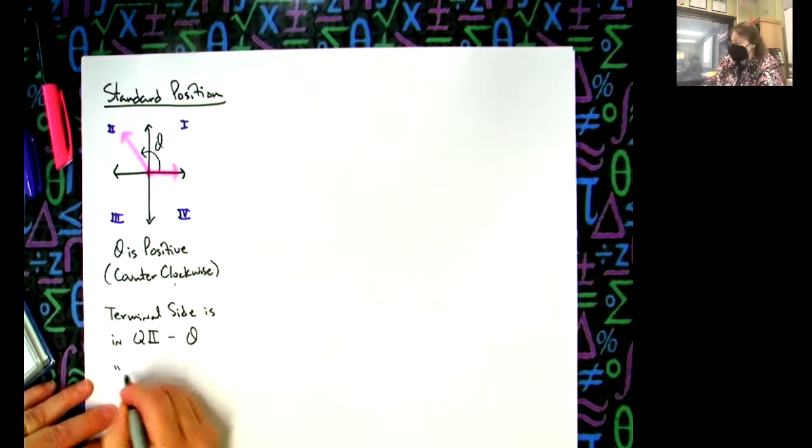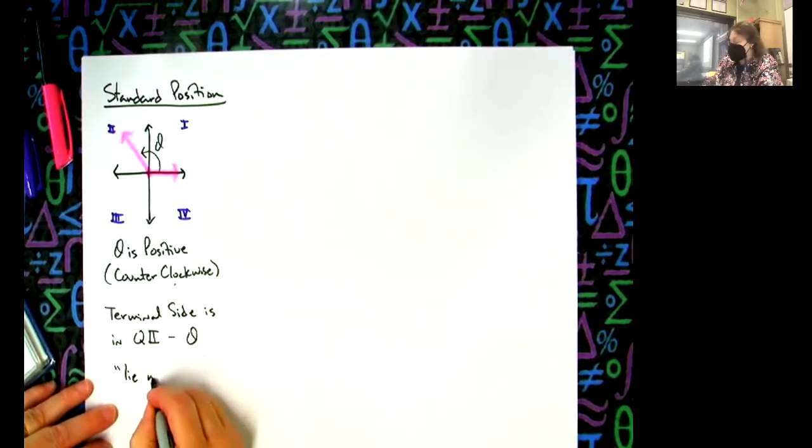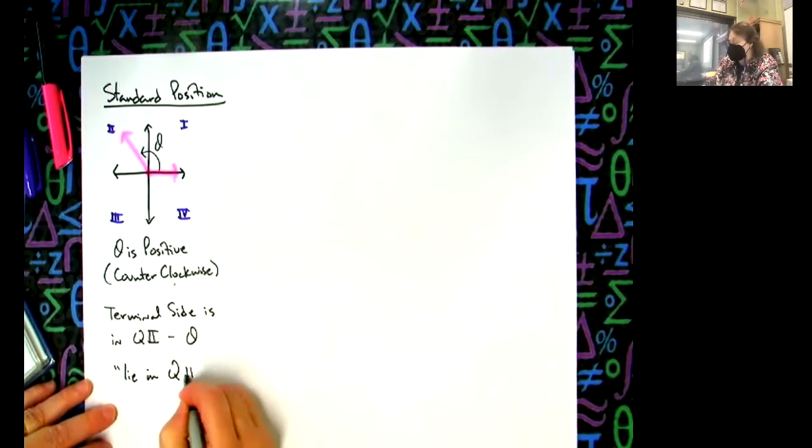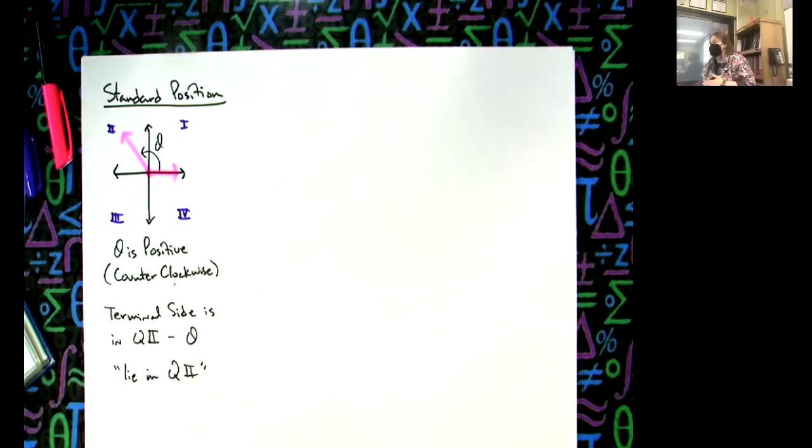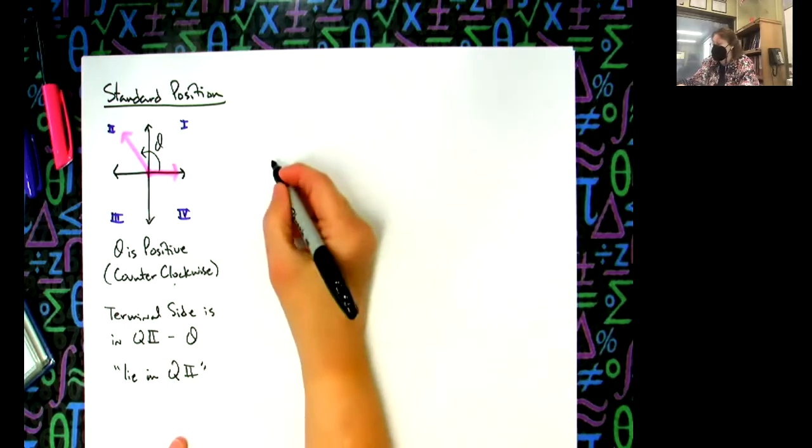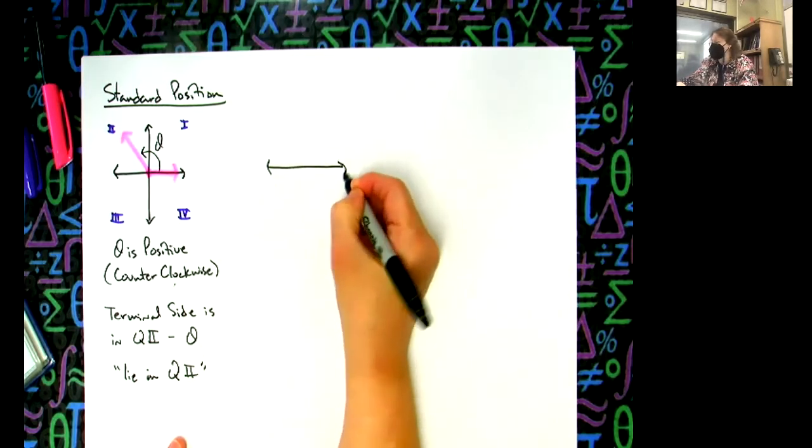Theta is considered to lie in quadrant two. So wherever that terminal side is, is how we reference the angle. We say theta lies in quadrant two because the terminal side ends there.